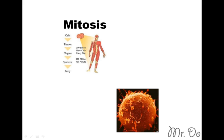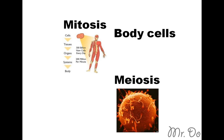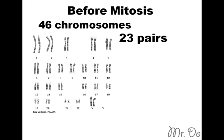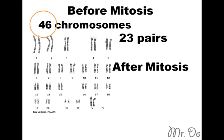Cell division comes in two parts: mitosis and meiosis. Mitosis is for the body cells, whereas meiosis is for the sex cells. The human body has 46 chromosomes — that's 23 pairs. In mitosis, your cells grow and divide. You start with 46, but even after division, you still have 46 chromosomes.